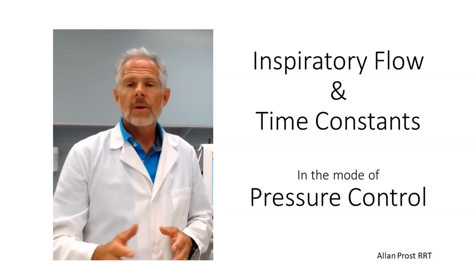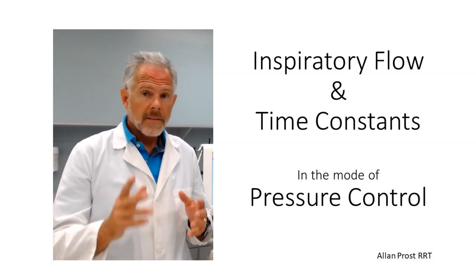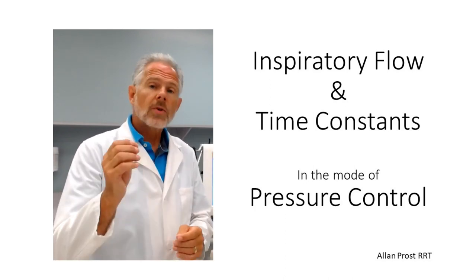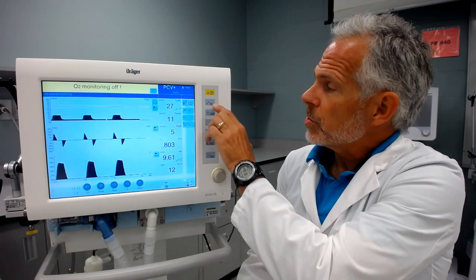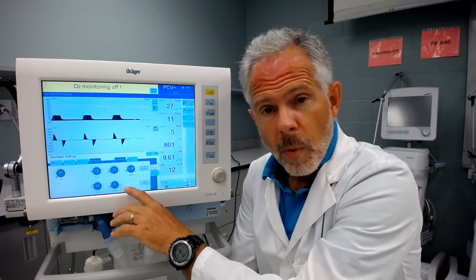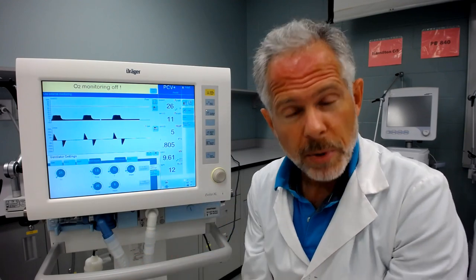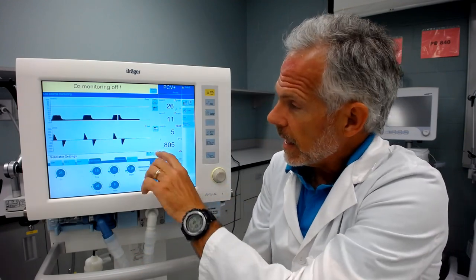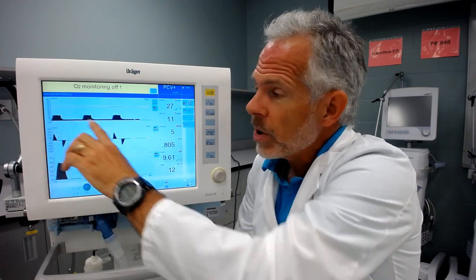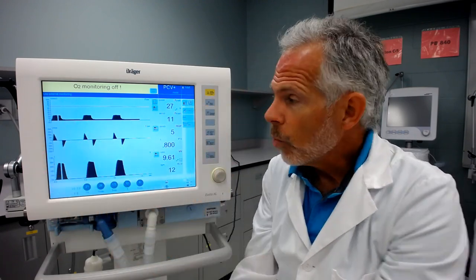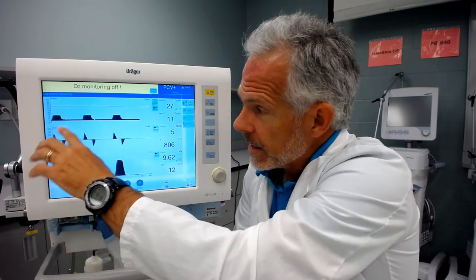My name is Alan Frost and I'm going to do a demonstration today on the effects of ventilator controls on inspiratory flow in the mode of pressure control. In pressure control, we set up a pressure gradient between the PEEP or base airway pressure and the peak inspiratory pressure. That pressure gradient inflates the lungs to a specific pressure, resulting in a certain tidal volume delivery and creating inspiratory flow, which is what we're examining today.